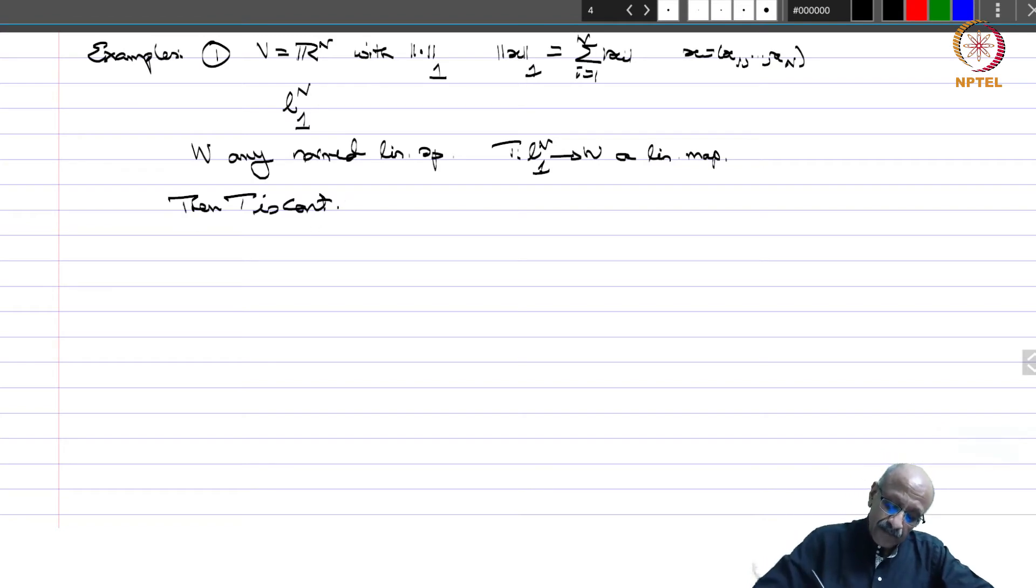Let us take E_i to be the standard basis vector. This is 1 in the ith place and 0 elsewhere. Then every x can be written as sigma i equals 1 to n x_i E_i. Therefore, Tx by linearity sigma i equals 1 to n x_i T E_i.